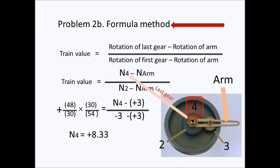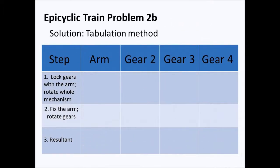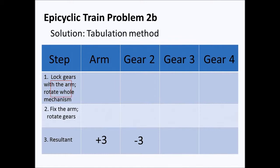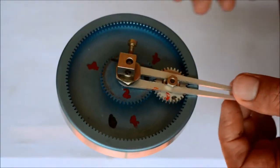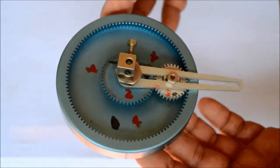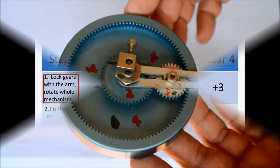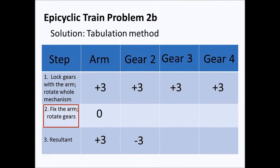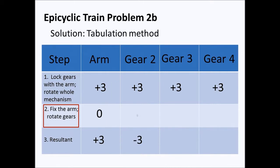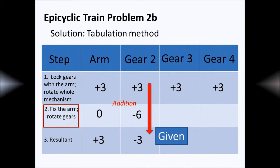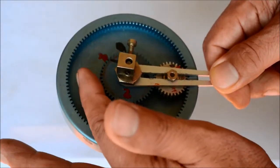We now proceed with the tabulation method. It will involve three steps, and we know the arm rotates plus three and gear two rotates negative three. For the first step we fill the boxes with plus three, as if the whole mechanism is rotating three times in the positive direction. For the second step we fix the arm and rotate the gears — that gives zero for the arm and negative six for gear two, to yield a resultant of negative three for gear two. The mechanism is now seen with gear two rotating negative six times.